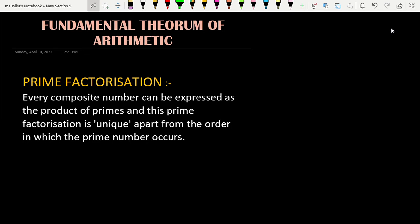So, what is the Fundamental Theorem of Arithmetic? The Fundamental Theorem of Arithmetic is basically prime factorization. Every composite number can be expressed as the product of primes, and this prime factorization is unique apart from the order in which the prime numbers occur. Prime factorization is usually used to find LCM and HCF.